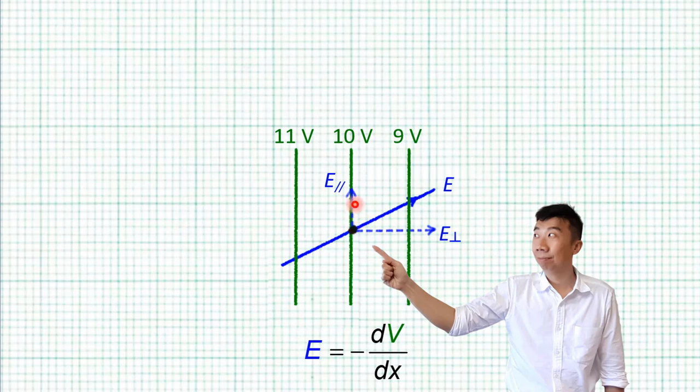But this component here is saying that the electric potential is decreasing along this direction. But that cannot be because this is an equipotential line, and the potential along this entire line is constant at 10 volts.